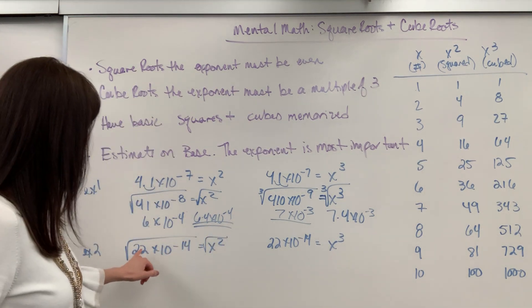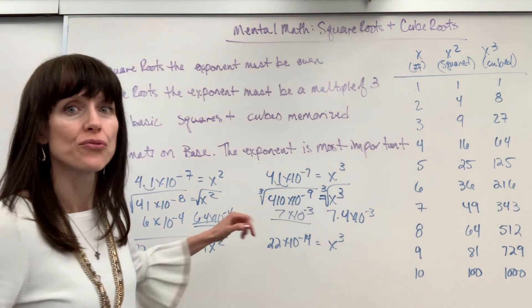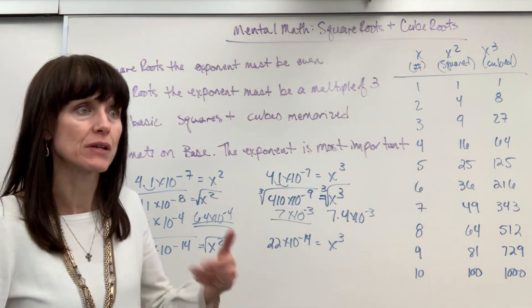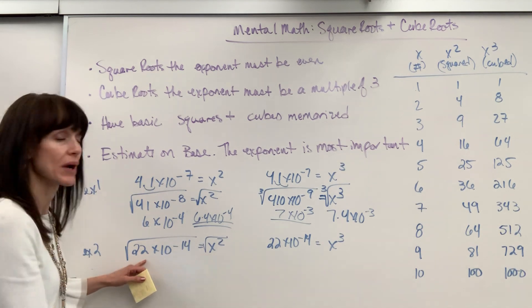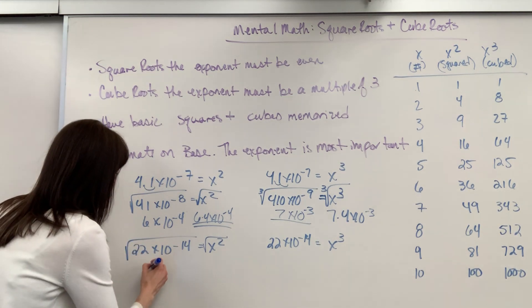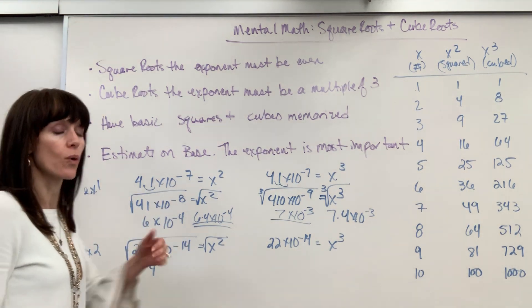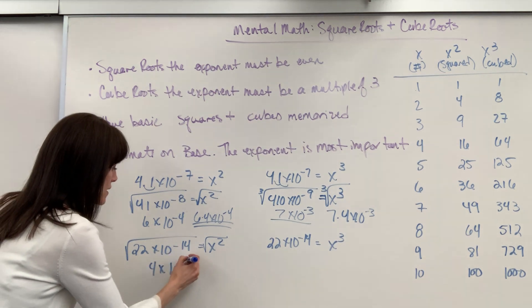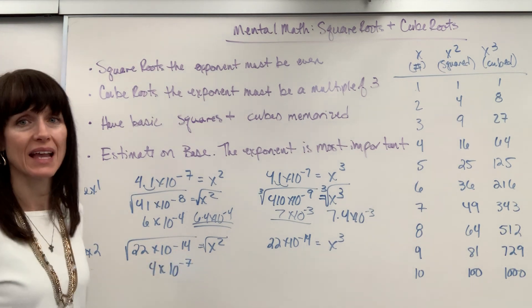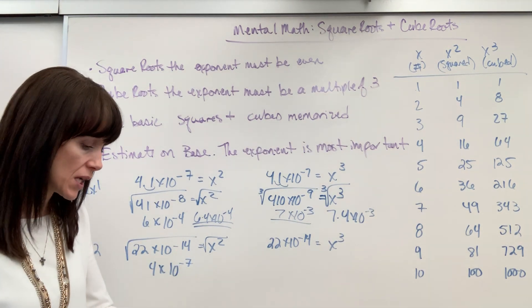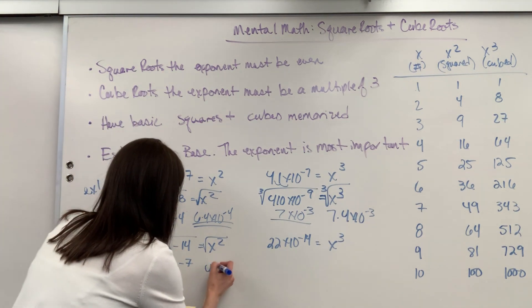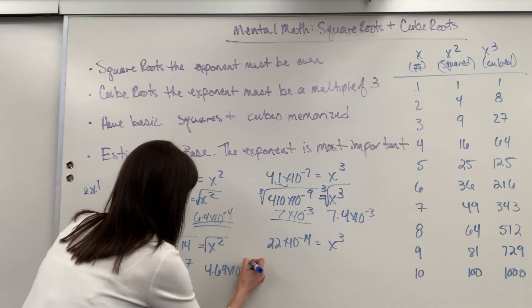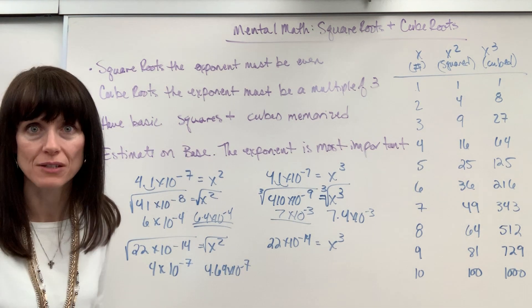This is nice, it's an even number, so I can take the square root right away. Square root of 22 - 4 × 4 is 16, 5 × 5 is 25. Remember, I always go to the lower one. This is going to be 4 point something because I'm not quite at that 5 being squared, times - and then you just half the exponent - times 10^-7. Take half of 14. The actual answer on this is 4.69 × 10^-7. Again, crazy close. It's awesome, you're doing so good.